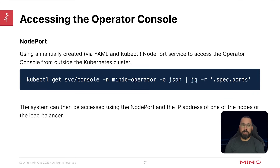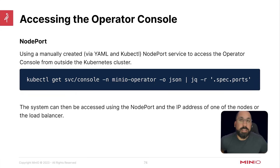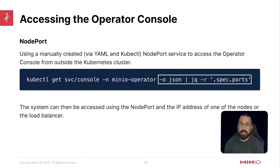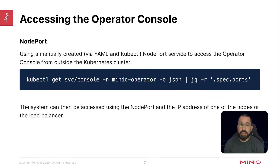The next way is to use a node port - manually created using YAML and kubectl. The node port service allows you to persistently access the operator from outside the cluster. Run kubectl get service console -n minio-operator to get the node port, which you can append to your host IP or load balancer IP to access the operator console. This is a persistent method if you do not have a DNS name and are not using ingress.